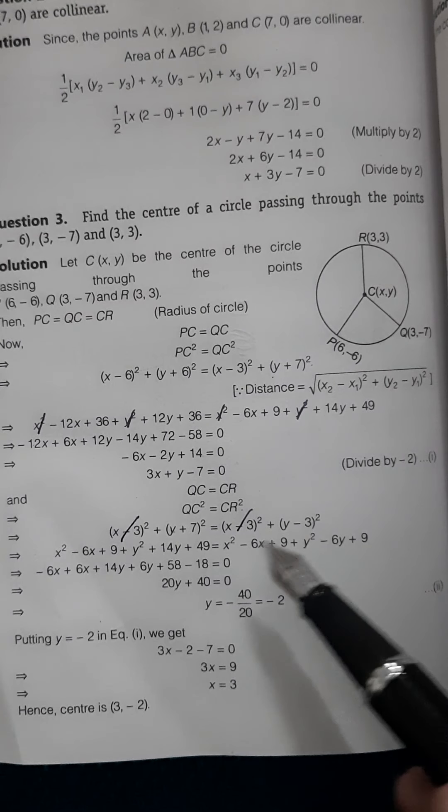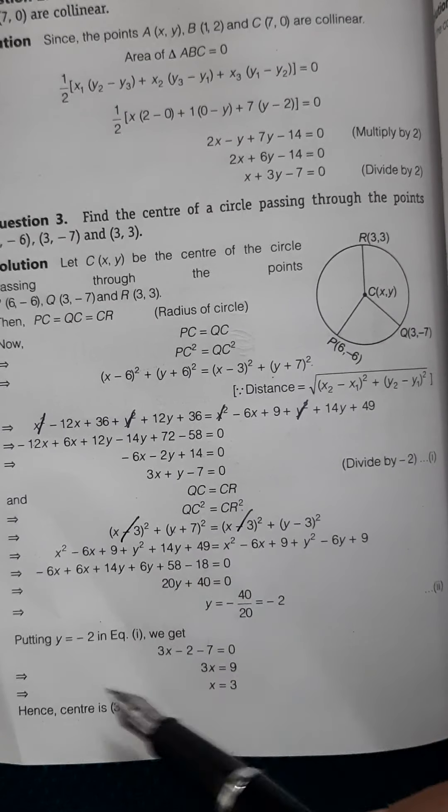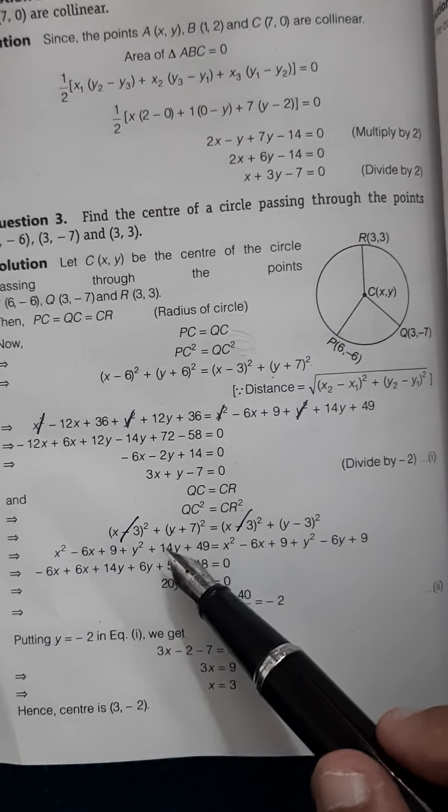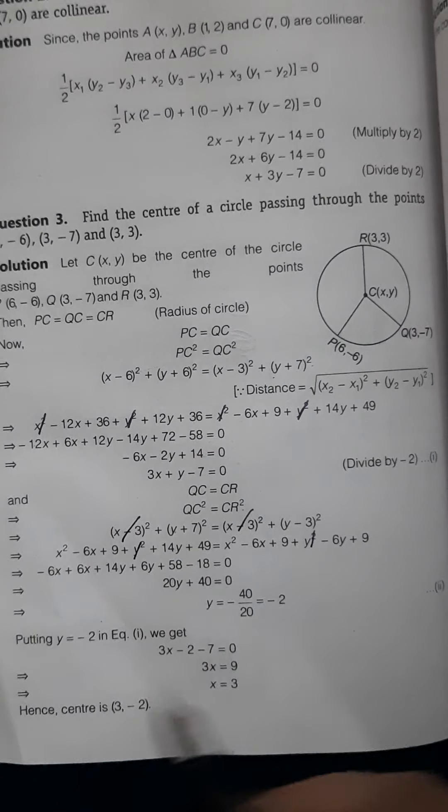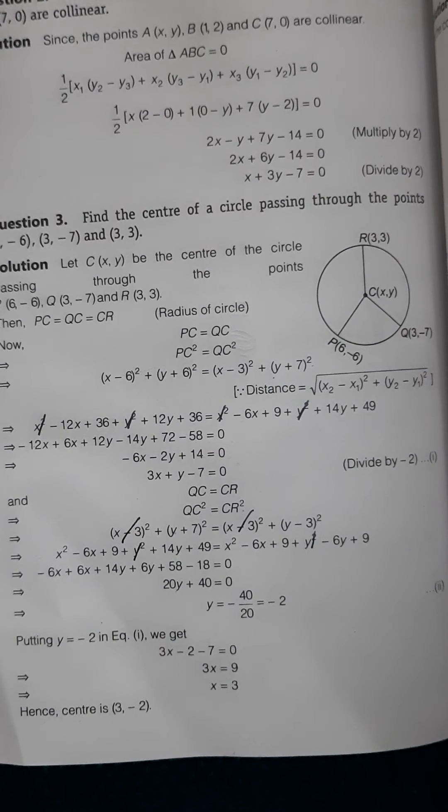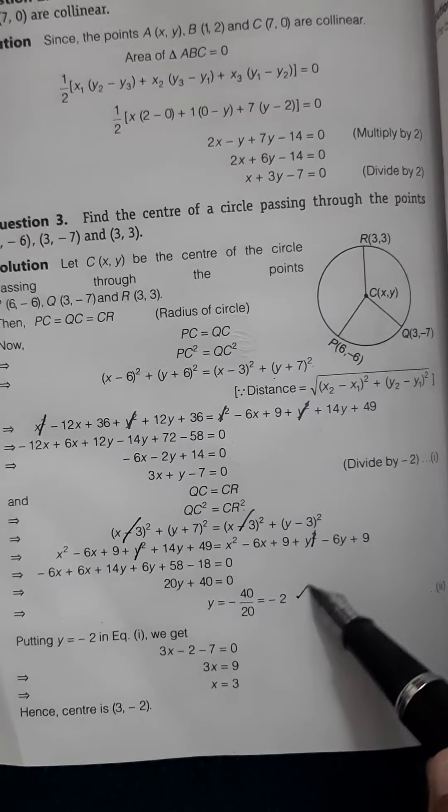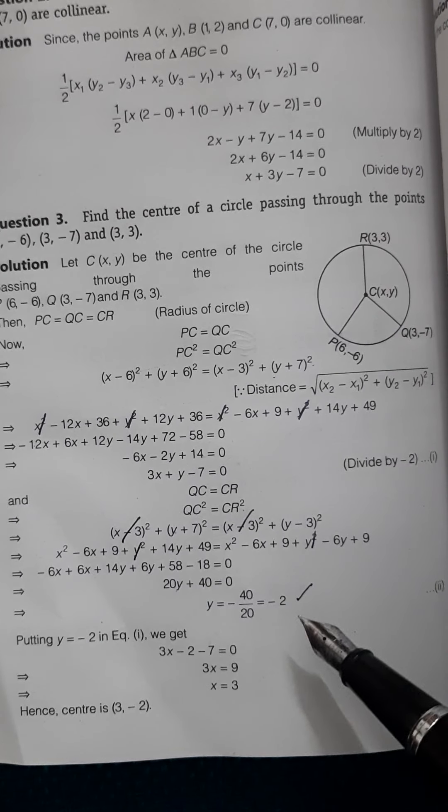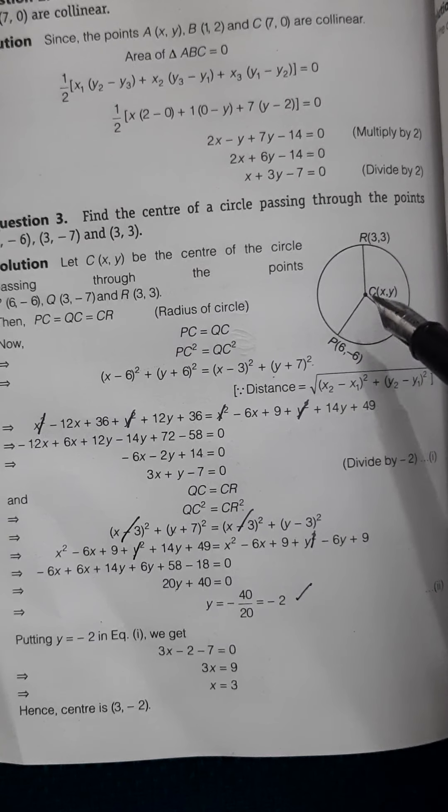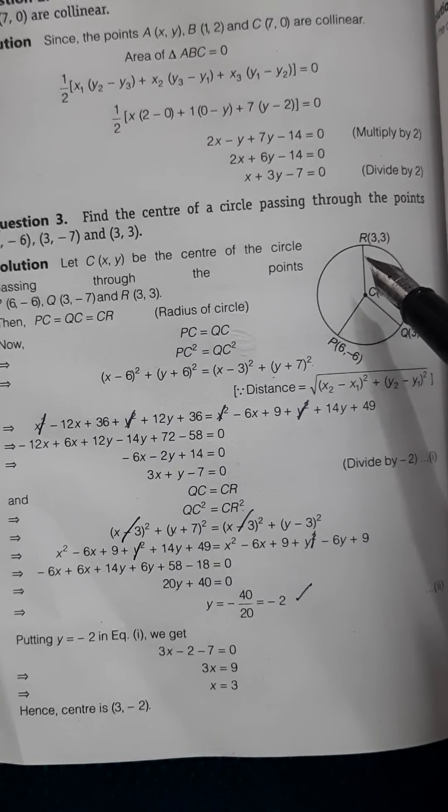What are we left with? These two brackets. When we solve this, the y² also is going to get cancelled. Therefore we get the value of y as -2. We got the value of y here. Now we equated CQ and CR, so now we can also equate any other two.